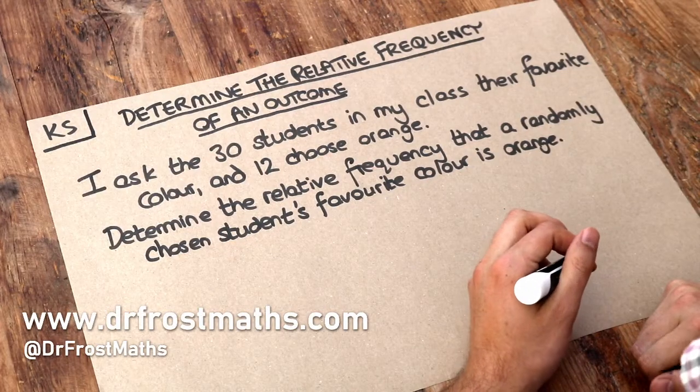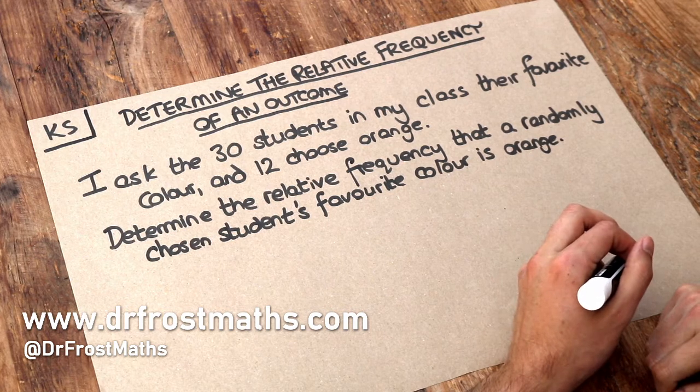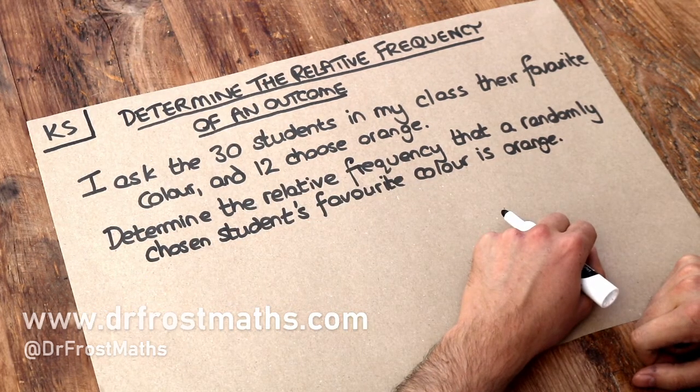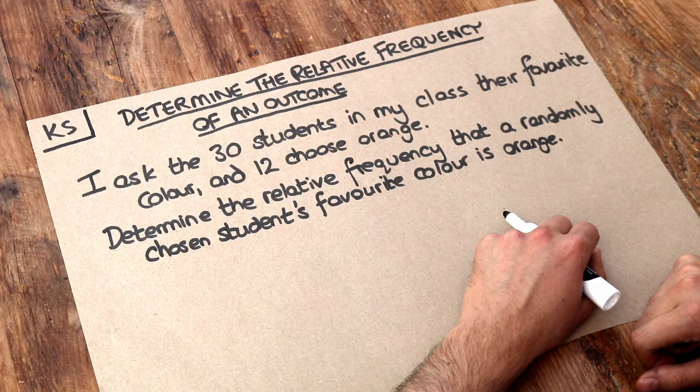Hello and welcome to this Dr. Frost Maths key skill video on determining the relative frequency of an outcome. So we have this problem here. I ask the 30 students in my class their favorite color and 12 choose orange.